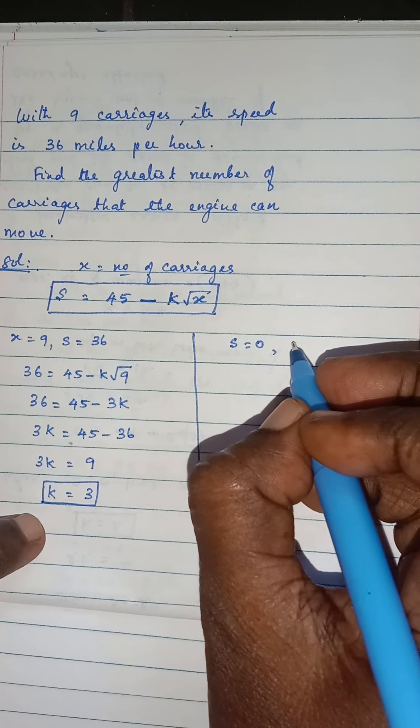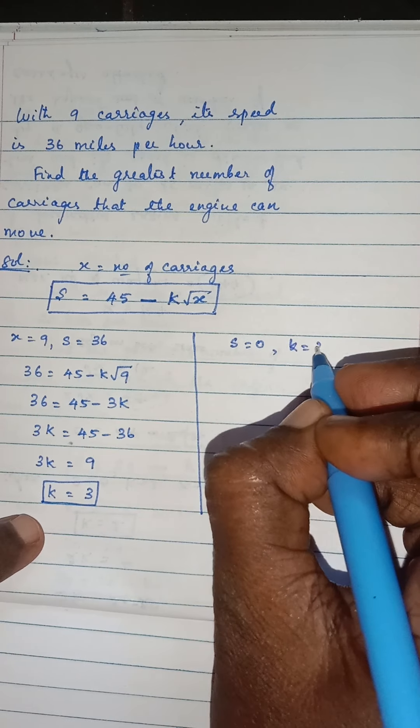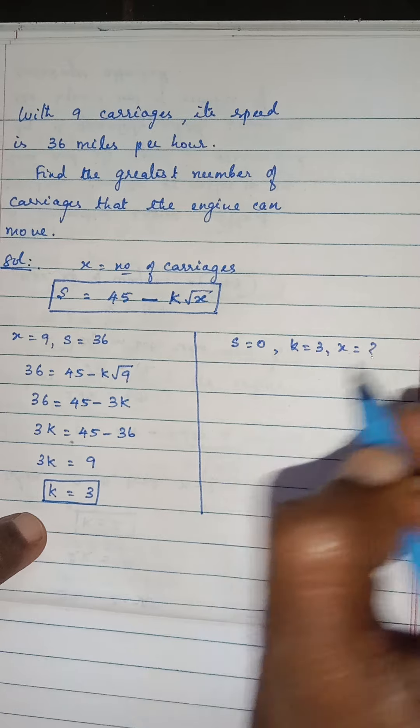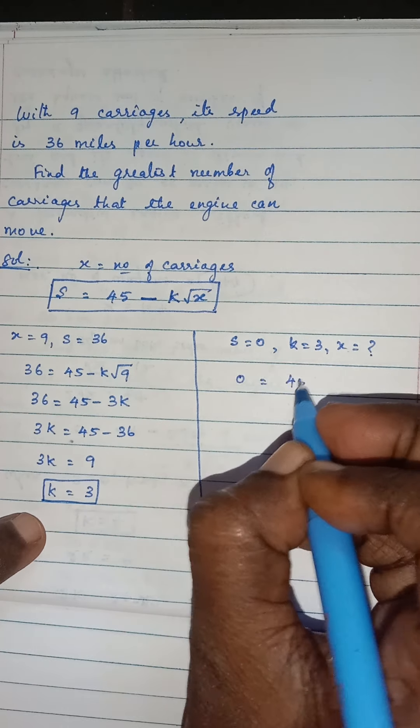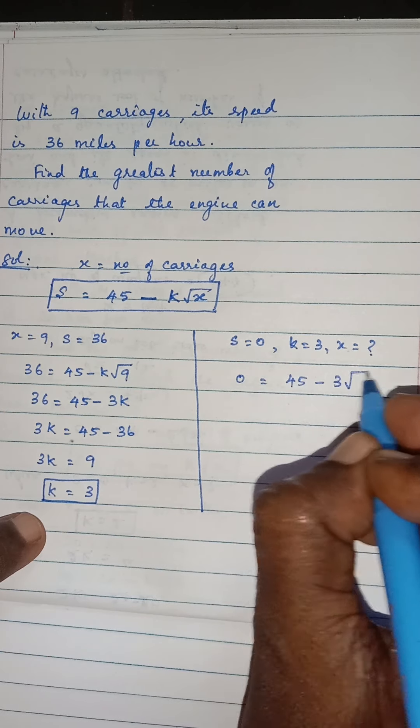For the engine to move, S is 0. K is 3. Then when S equals 0, it's 45 minus 3 times square root of x.